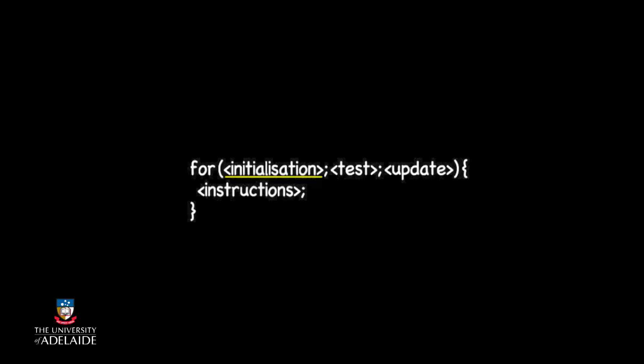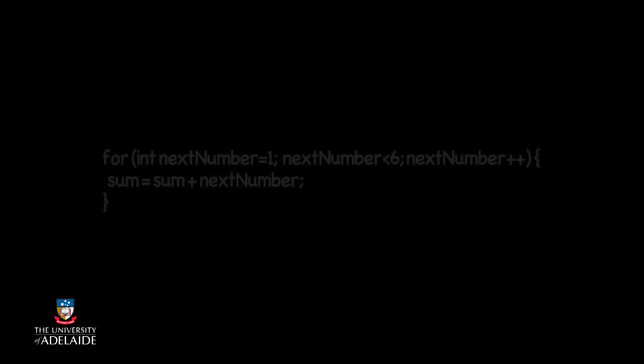The initialization section is where we can declare a variable that holds an initial value. In this case, we have declared a variable called nextNumber, which holds the value of the next number in our sequence that is to be added to the sum.